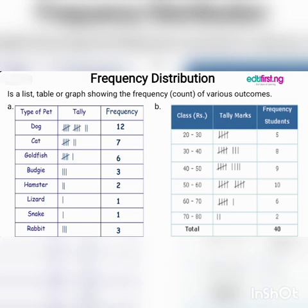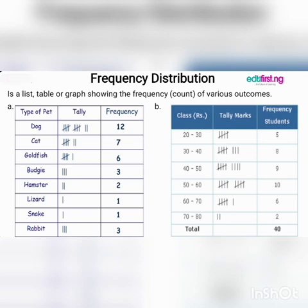Table A is for ungrouped data, while Table B is for grouped data. Table B is about marks of students in a class. Students scoring 20–30 are five, 30–40 are eight, 40–50 are nine, and down to 70–80 which are just two. The total number of students is 40.